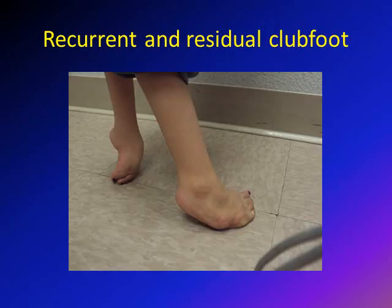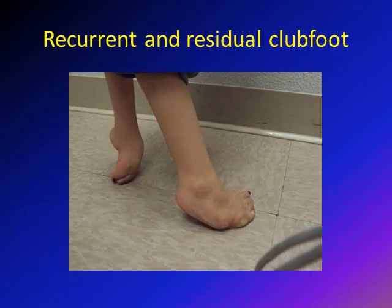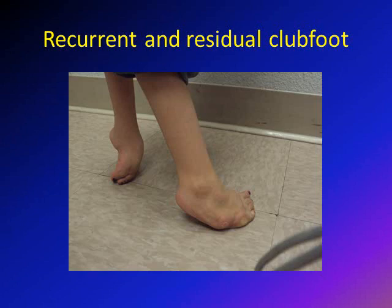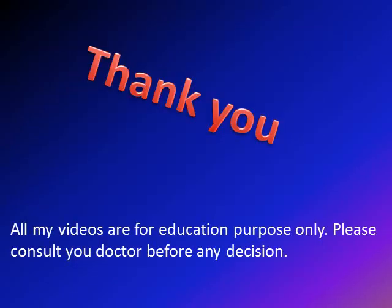Children who are not treated as infants or not fully corrected will present later in life with recurrent or residual clubfoot. For example, a three-year-old girl presenting with equinus, forefoot adduction, and hindfoot varus who was never treated. These children should be referred to an orthopedic surgeon. A trial of casting can begin to reduce the deformity; however, most will require surgical treatment — either open surgery or application of an external fixator to gradually correct the deformity.